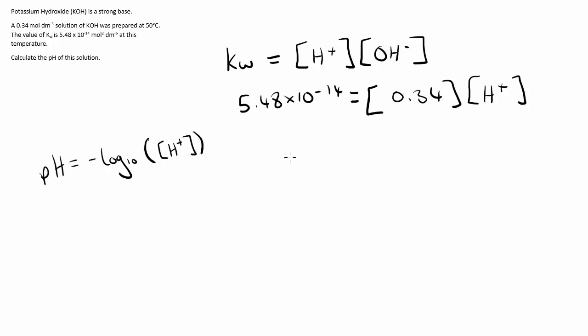In order to carry out that calculation, we need the concentration of H+ ions. So how do we work that out? We just need to rearrange this particular formula. The H+ ion concentration is going to be equal to the ionic product of water divided by the concentration of OH- ions.